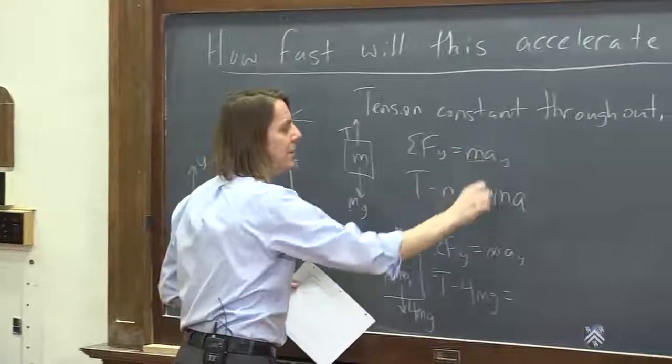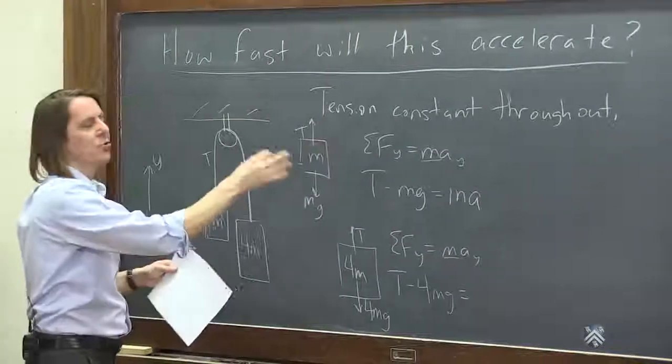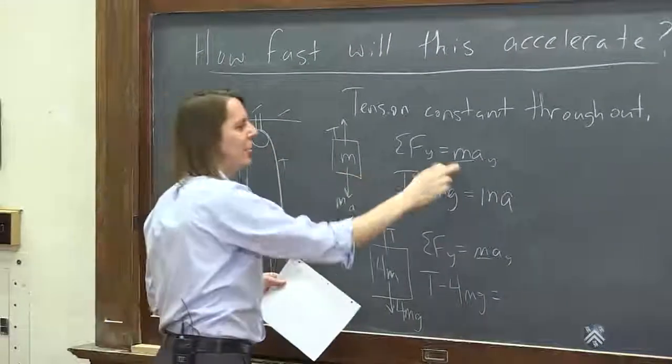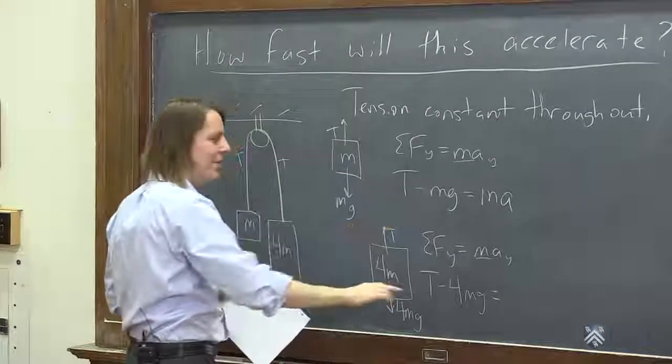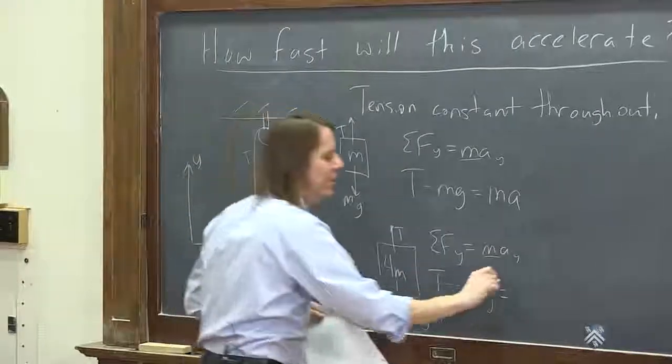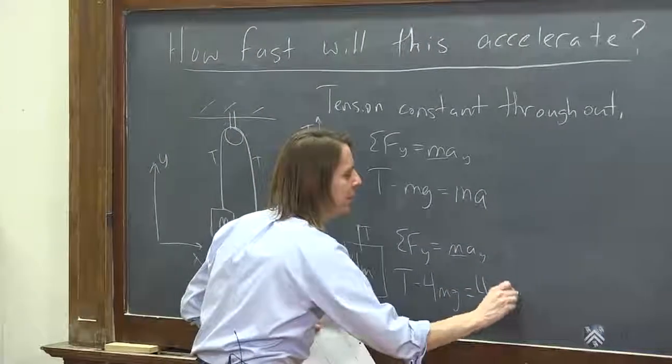tension pulls up minus 4Mg down equals 4M. So here and here, it's the general mass from Newton's second law, and I'm plugging in the actual mass. So that's why I switched that to that. Here, the general mass from Newton's second law, and I'm plugging in 4M. That got a little ambiguous.